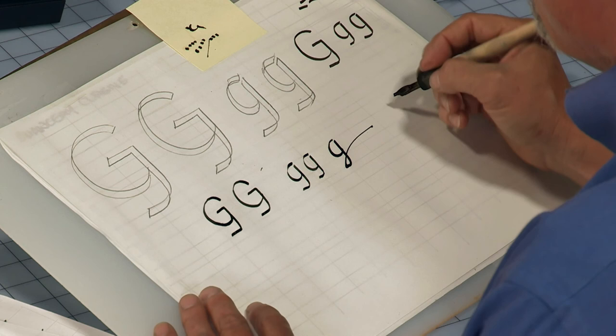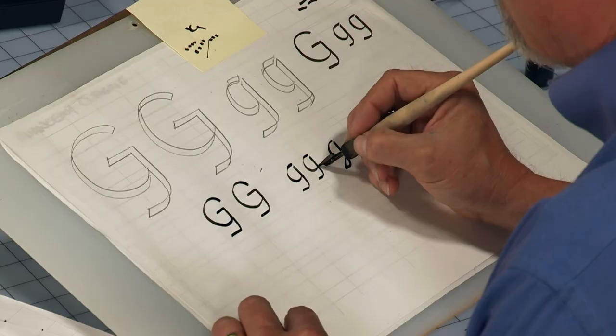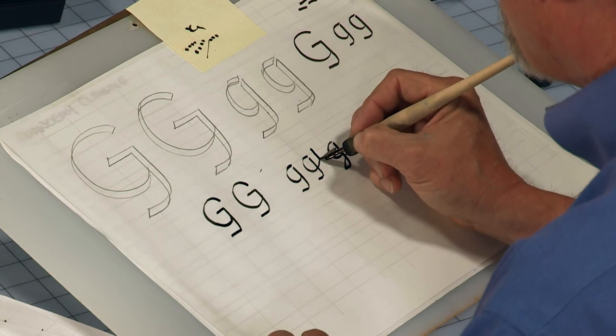If you want to connect the letter G to the next letter beside it, most of the time you don't. You just leave it disconnected. Now, if you feel like that is just way too inconsistent with the way you're doing, you could extend this part of the curve up to your next letter, whatever that may be. But that's letter G.